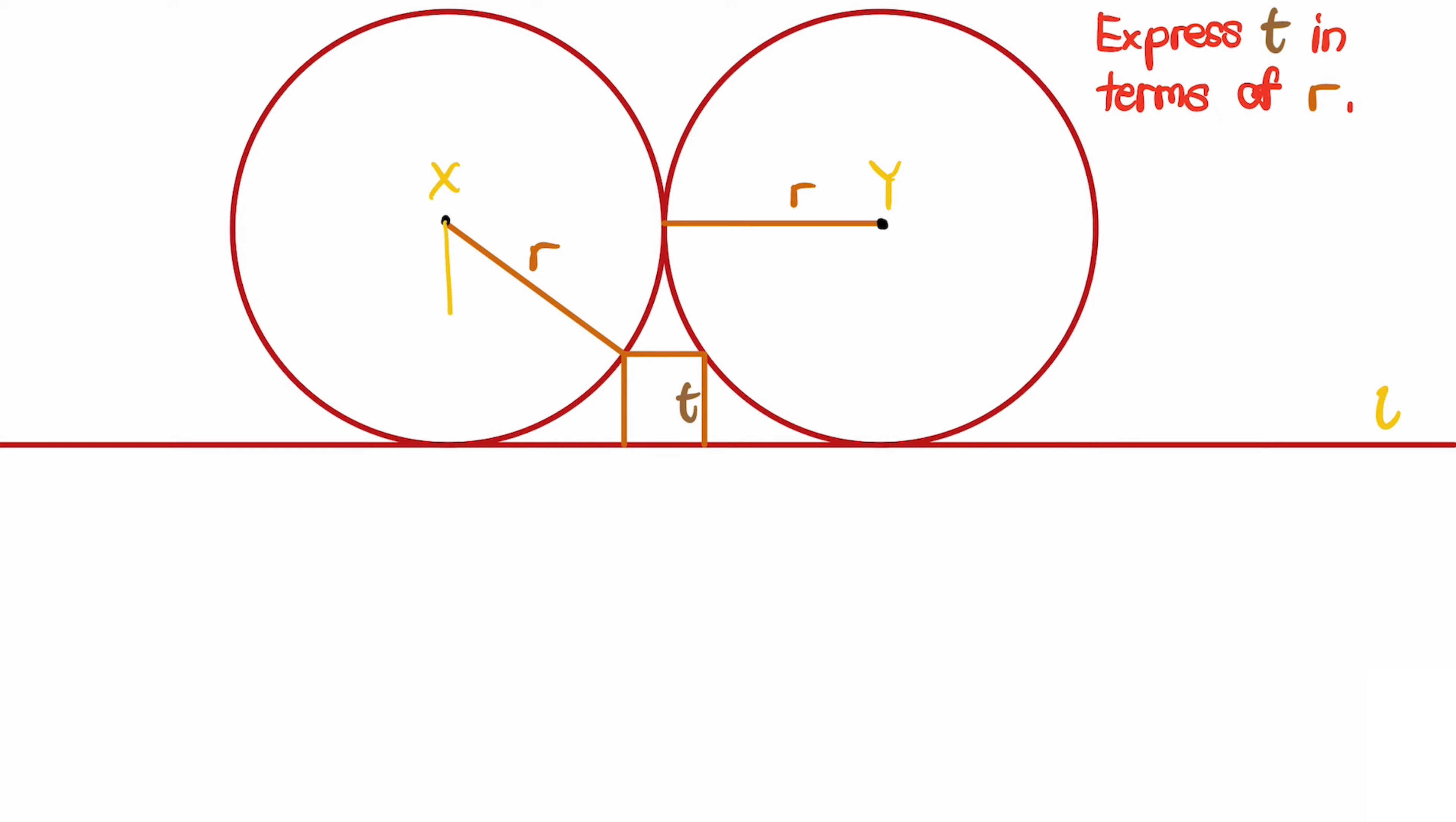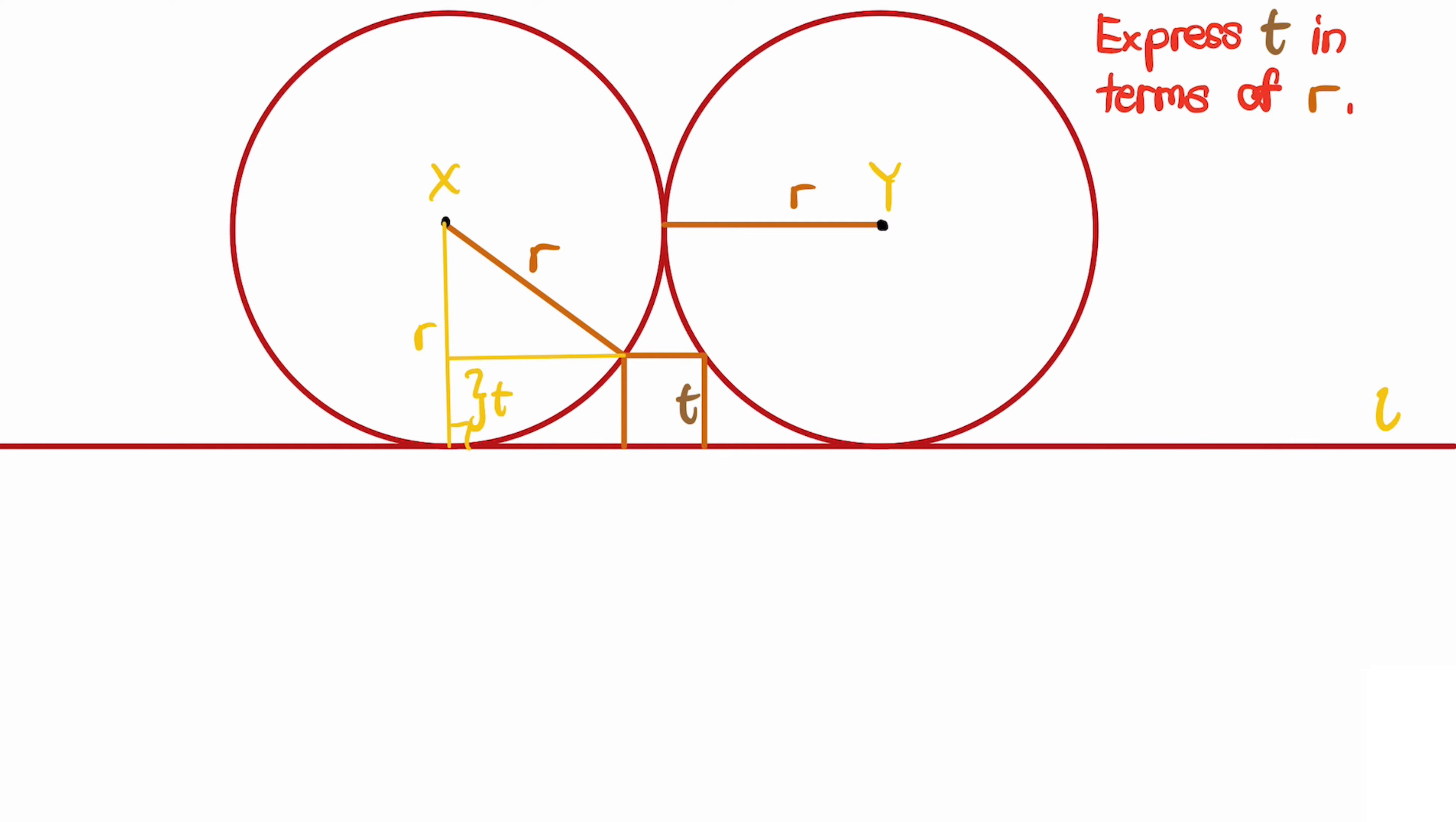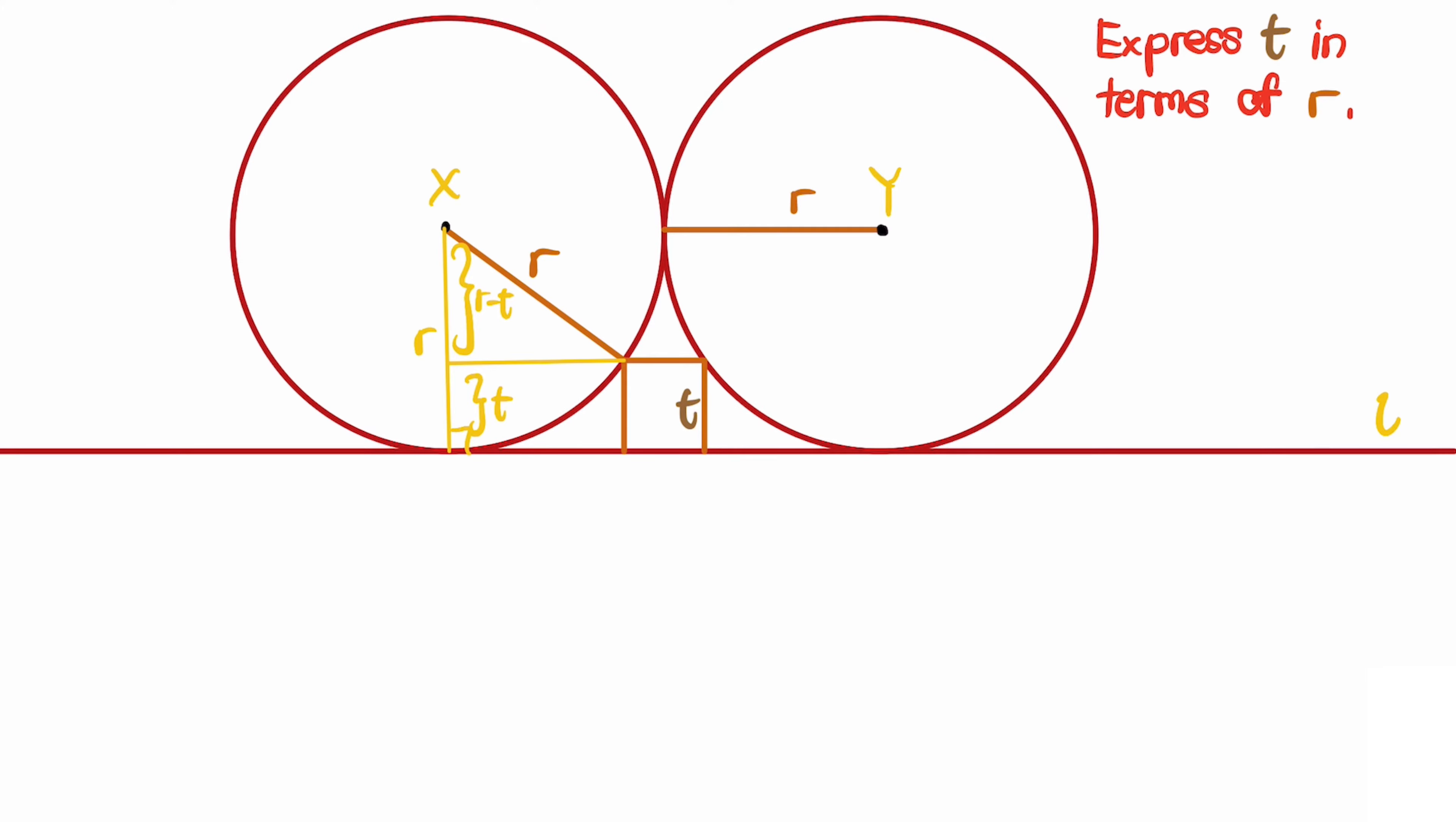We see that if we drop a tangent line towards the line l, this length equals r. Now let's draw a perpendicular line to this from a corner of the square. We see this length equals t and this length is r minus t.